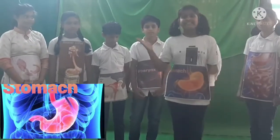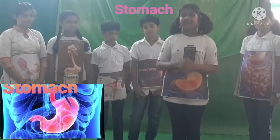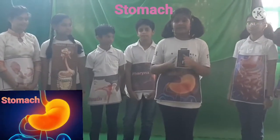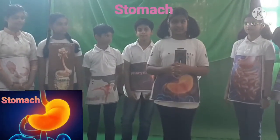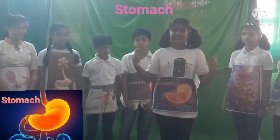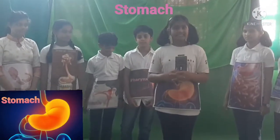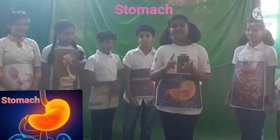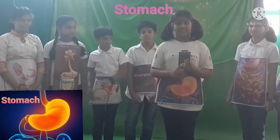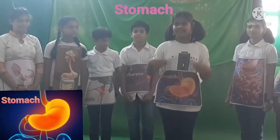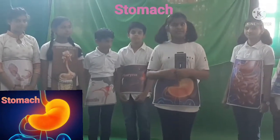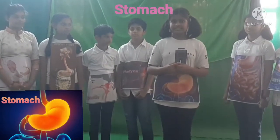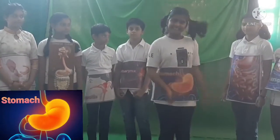Hello friends, I am the stomach. I am a large sack-like part of the alimentary canal. The gastric glands of the stomach secrete gastric juice. Churning of food takes place here. The gastric juice consists of pepsin, hydrochloric acid, and rennin. These components are mixed with food and food becomes acidic here. A semi-solid mixture is slowly pushed into the small intestine.